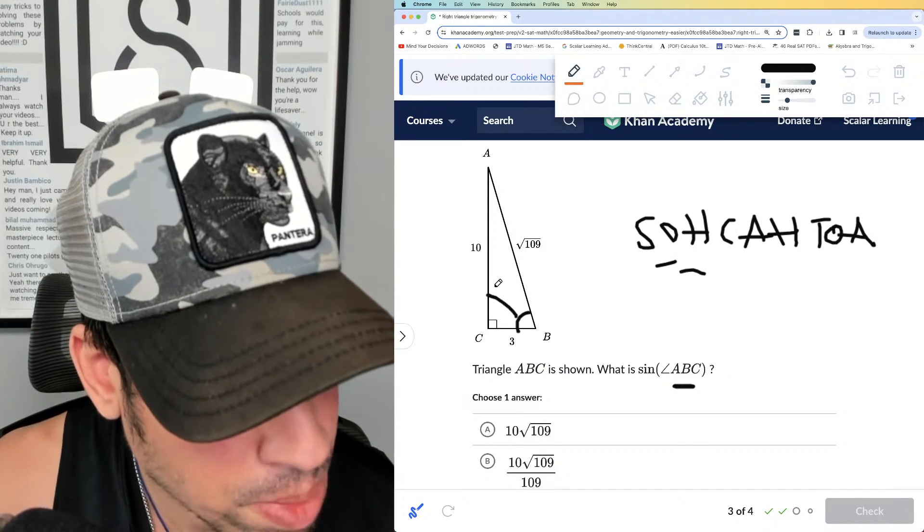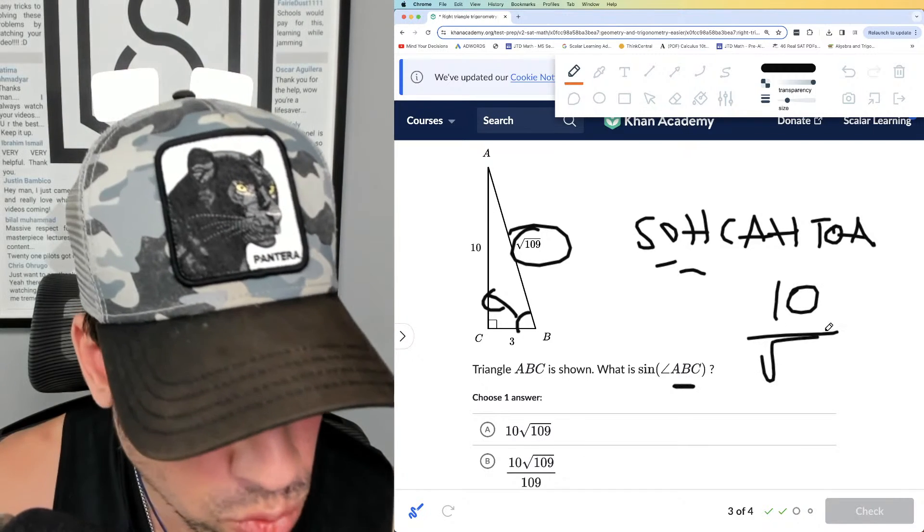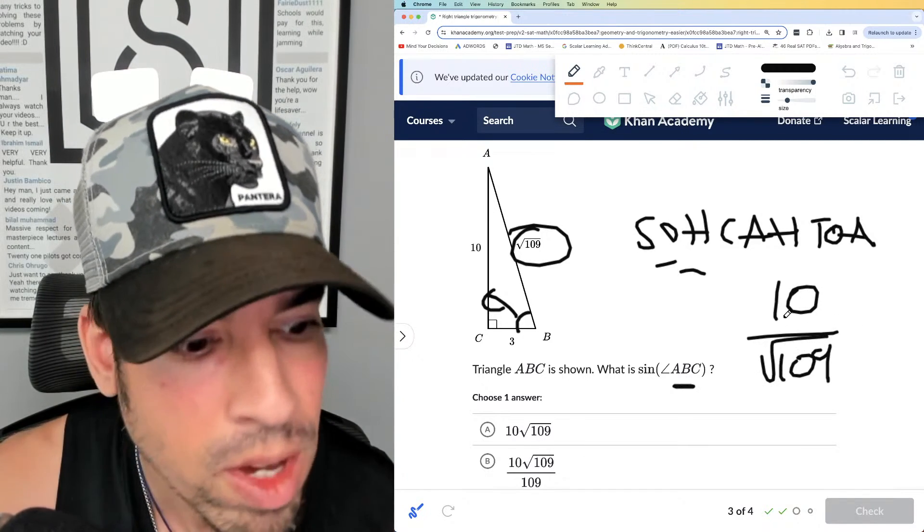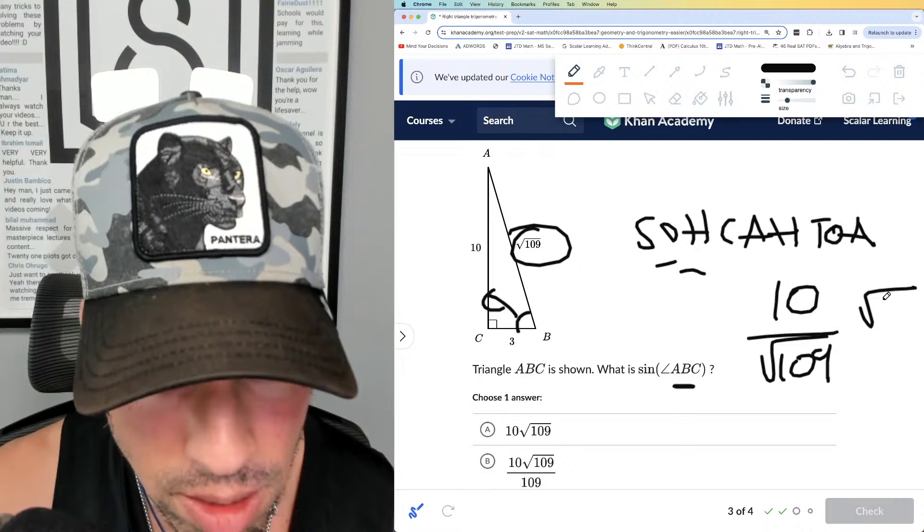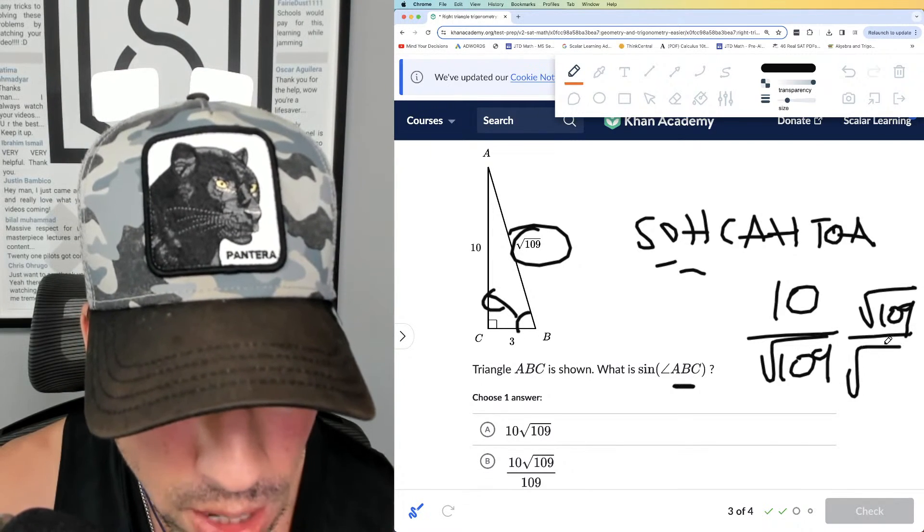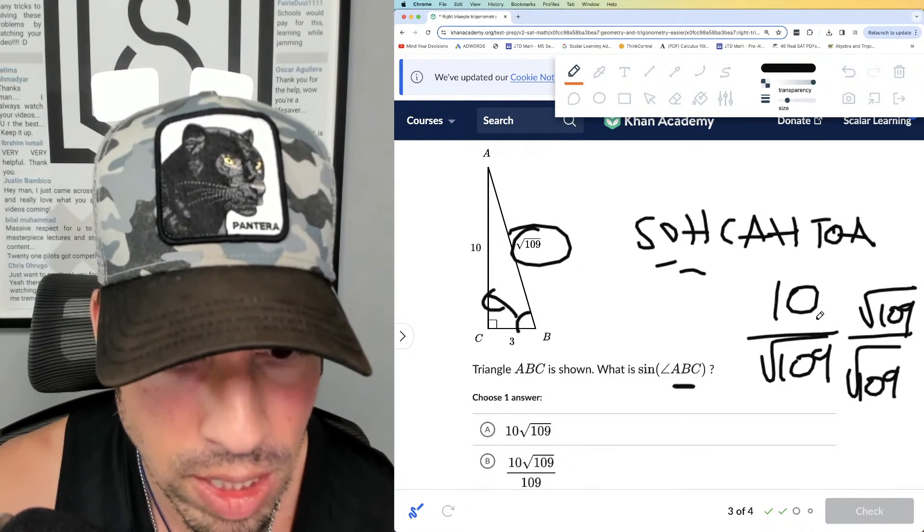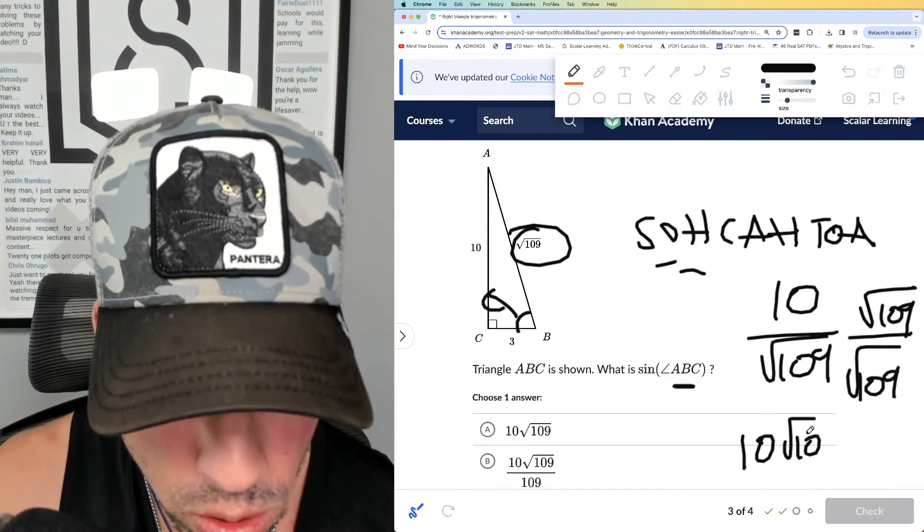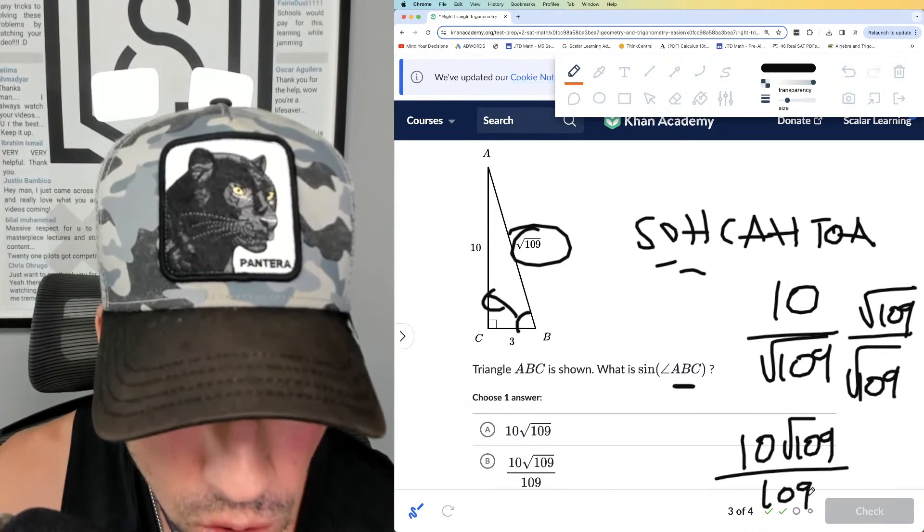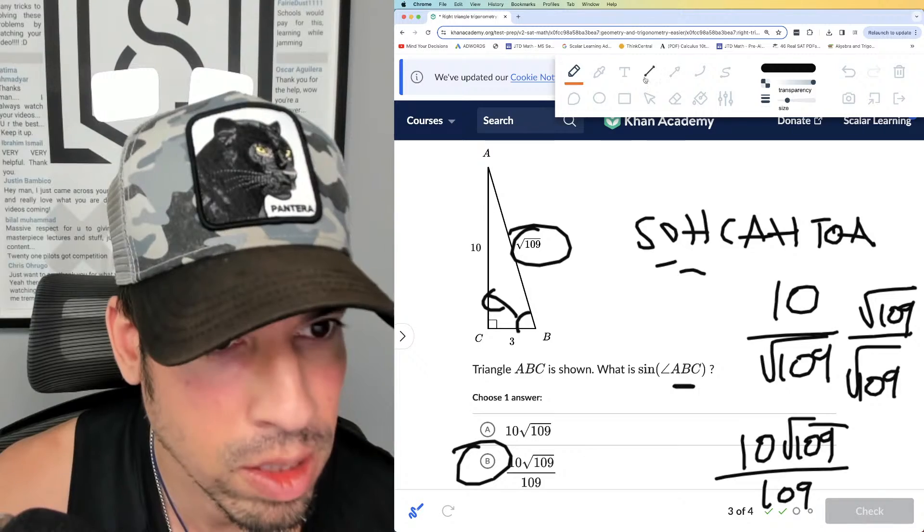So the opposite leg over the hypotenuse, so 10 over √109. And then we're going to rationalize it again by multiplying by √109 over √109, and then we get 10√109 over 109, which means B is the winner. Done.